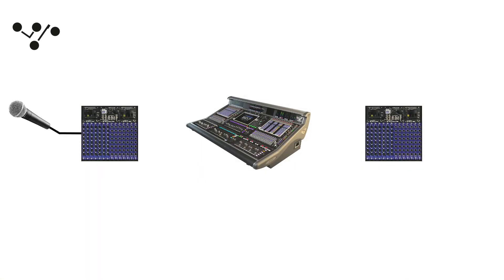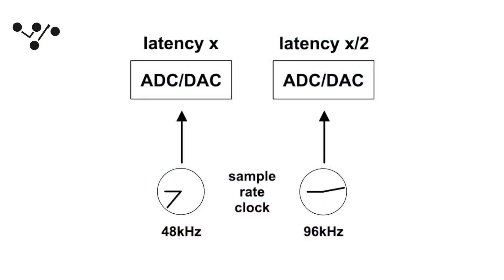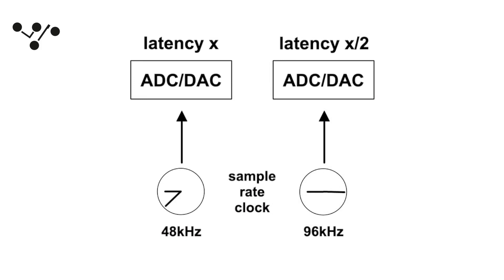For a Digico system using a remote stage rack, this can be as low as 530 microseconds at 96k — just over half a millisecond. This is unlikely to be the latency in most systems, but from a measurement point of view it demonstrates just how quick our conversion and processing is if you want it to be. A large proportion of latency in these systems is often down to the A to D and D to A stages. Sample rate plays a part here too — clocking the converters faster, 96k as opposed to 48k sampling rates, makes the conversion twice as quick, and different generations of converters can also have different latencies.